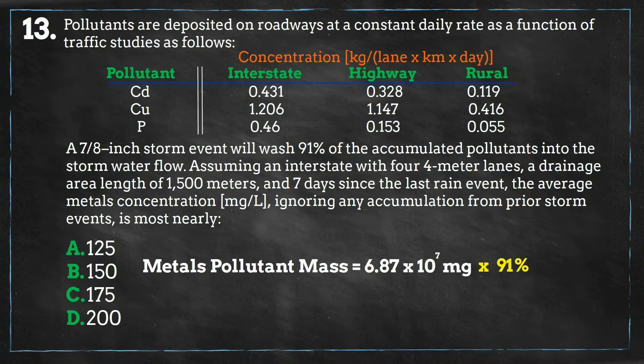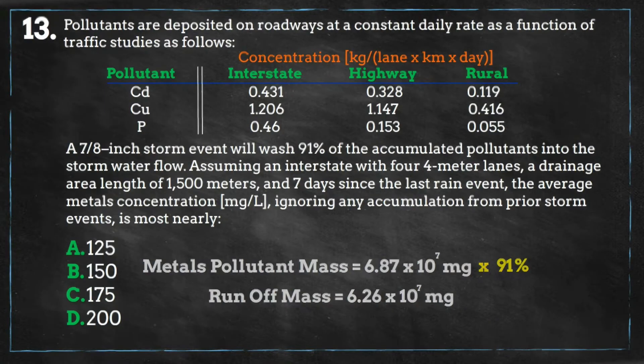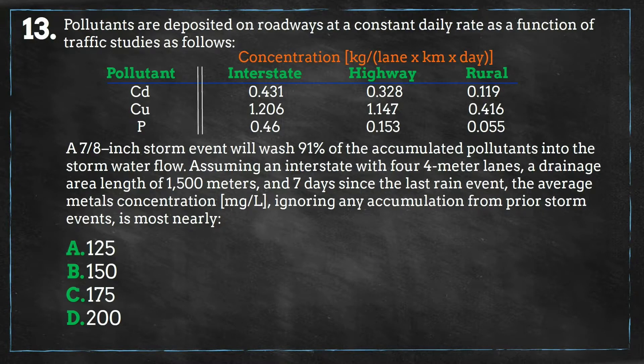We will multiply this mass by 91 percent, the percentage that will end up in stormwater runoff, and we get the pollutant mass of 6.26 times 10 to the 7th power milligrams.